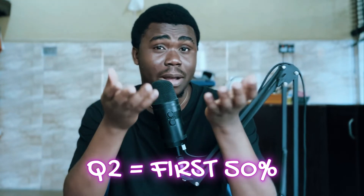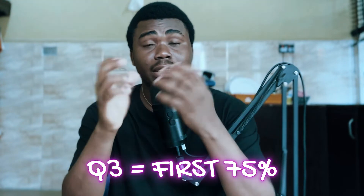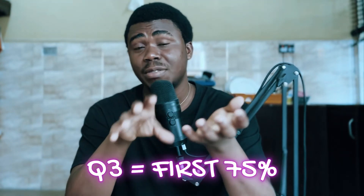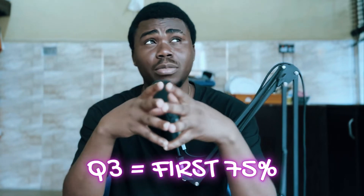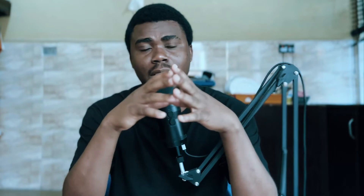The first quartile is the 25 percent mark of the distribution, the median is the 50 percent mark, and the third quartile is the 75 percent mark of the distribution. I'll be talking more about these numbers when we get to the numerical analysis part.